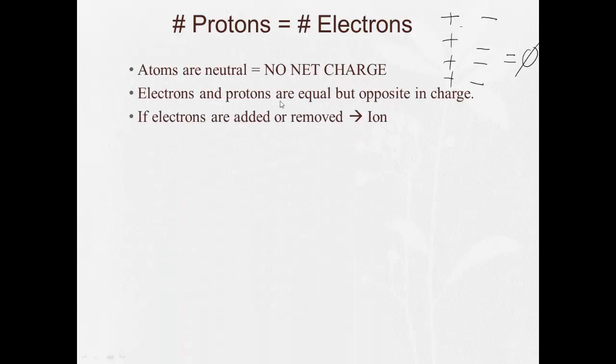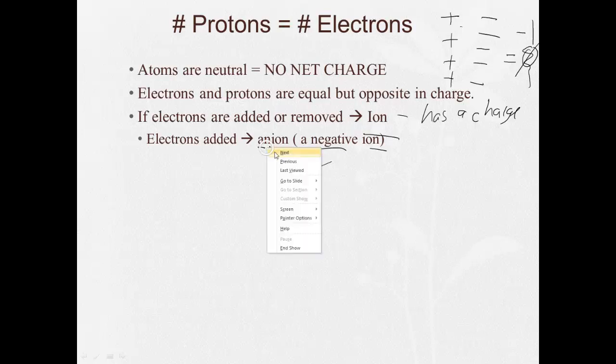Now, if you add an electron or remove an electron, you're going to get something with a charge called an ion. So an ion has a charge. So going back to my example here, let's say I add an electron. Well, I have four pluses and now five minuses. So instead of being neutral, I have negative one. So when I add an electron, my charge becomes more negative. So when electrons are added, you get a negative ion. And that's called an anion. Here's how I remember it. A N. A negative ion.